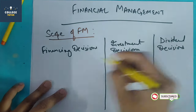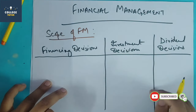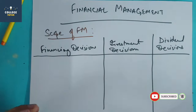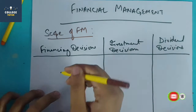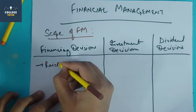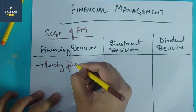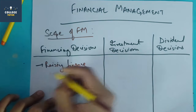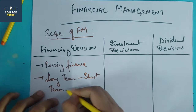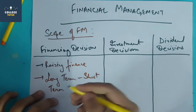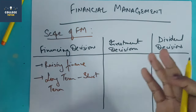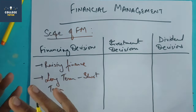Financing decisions cover all decisions related to raising finance — whether long term or short term. This includes short-term loans, overdraft (OD), cash credit (CC) facility, and other business financing tools.